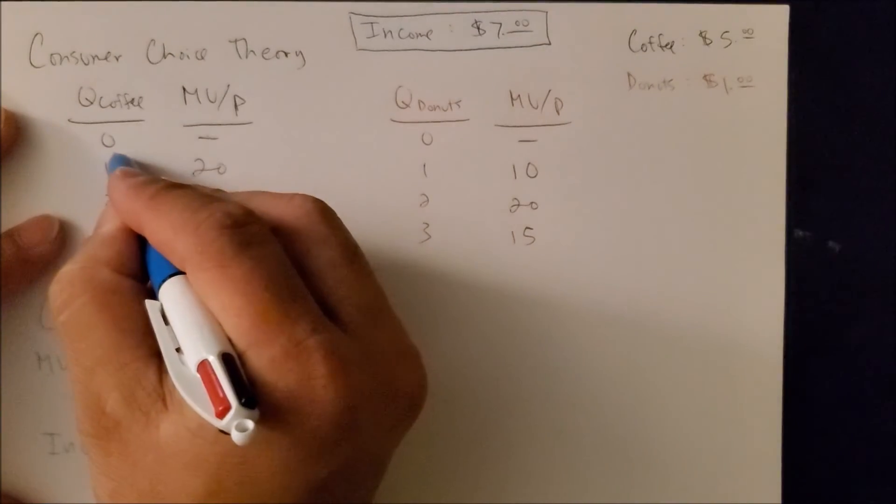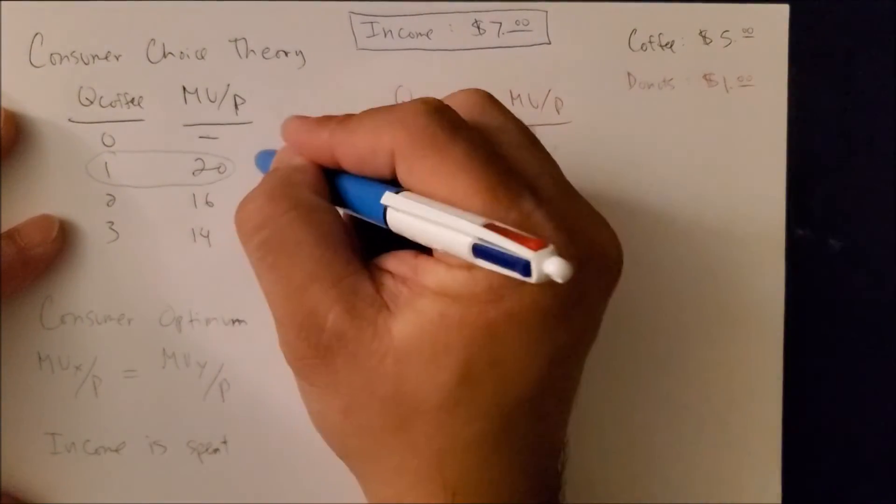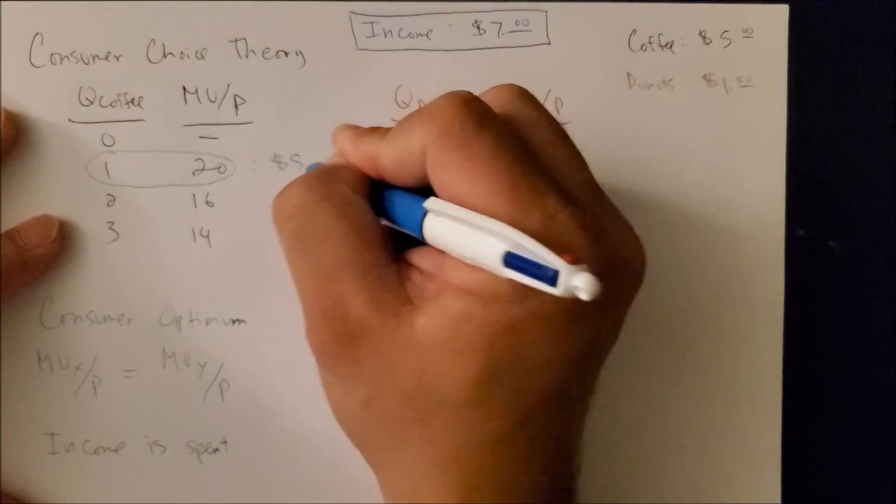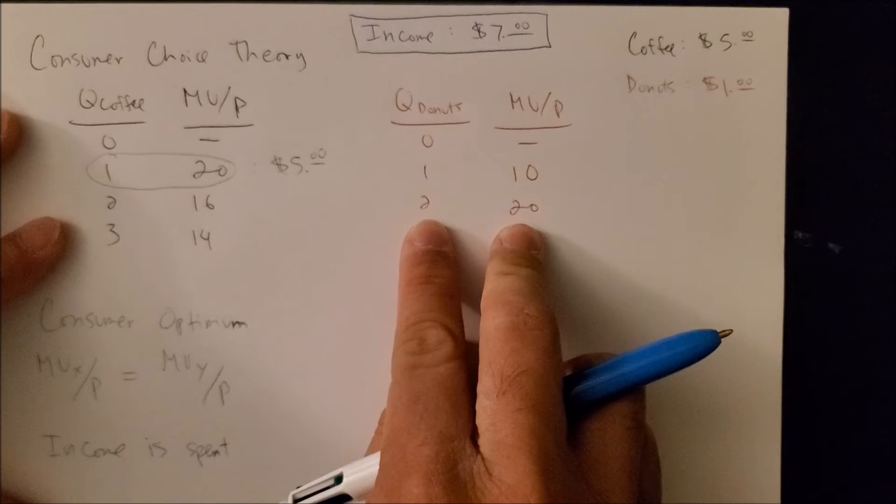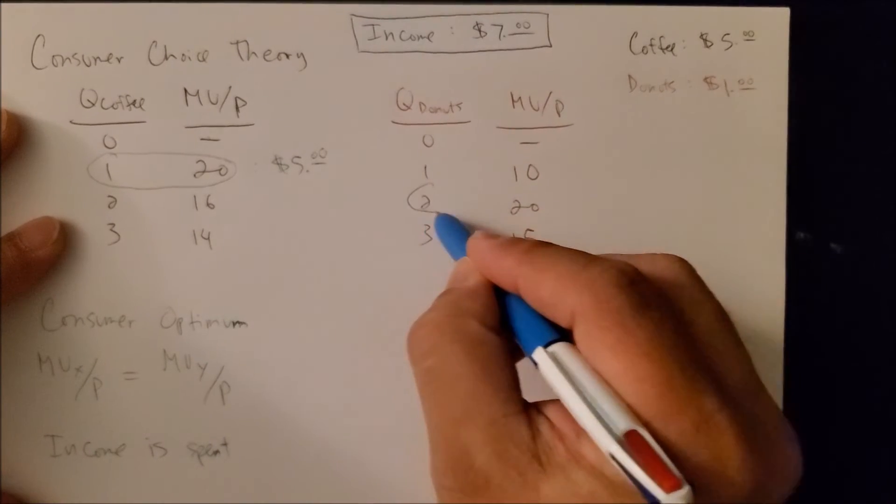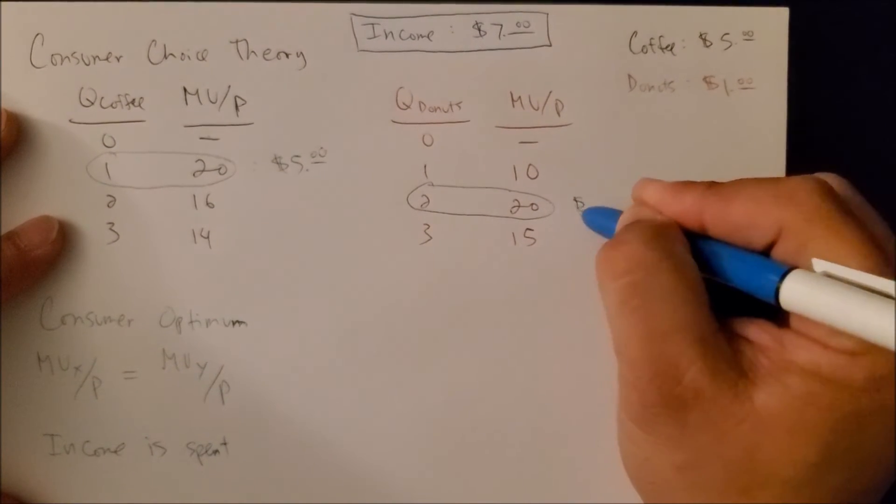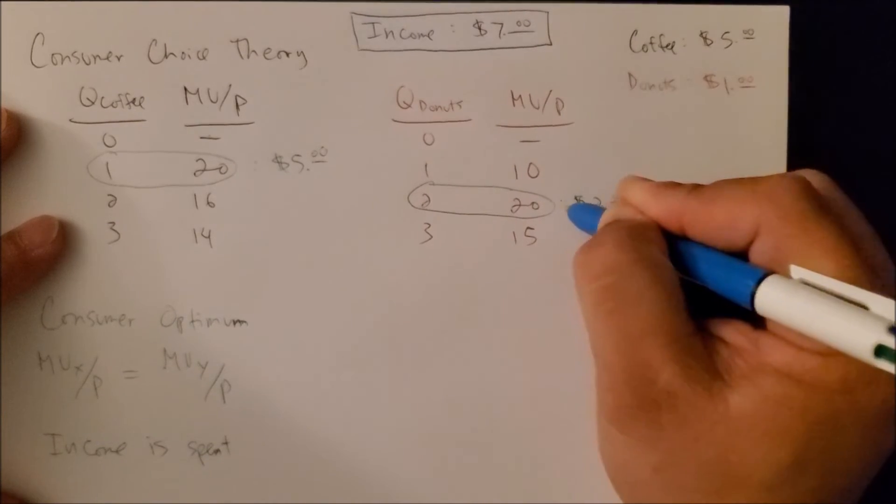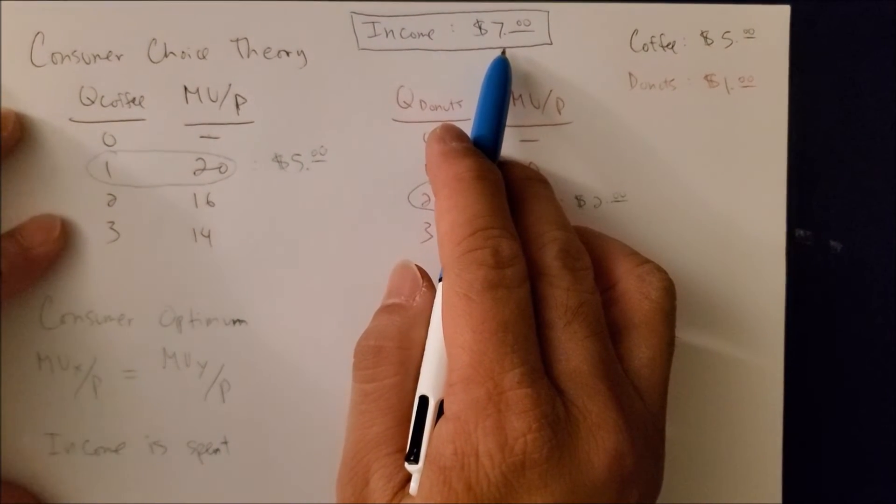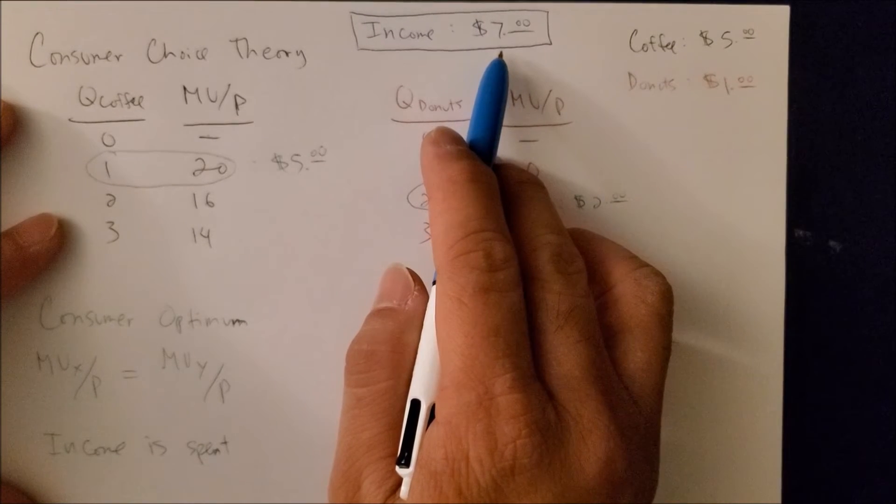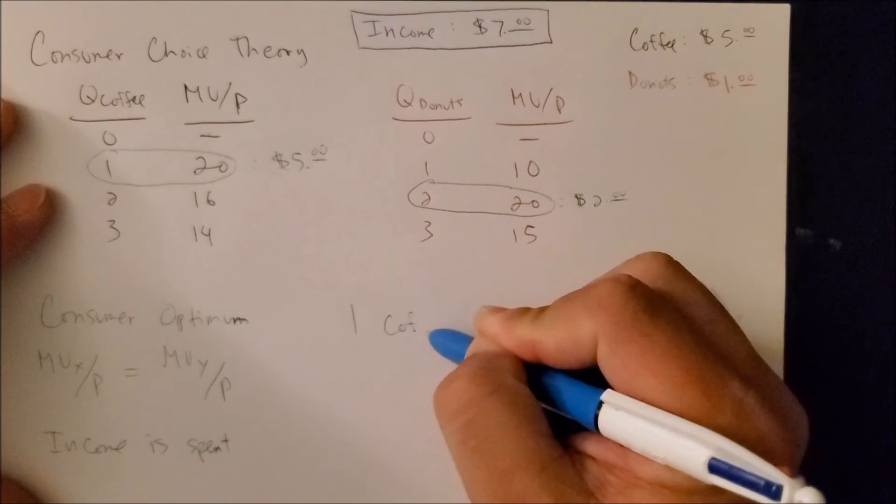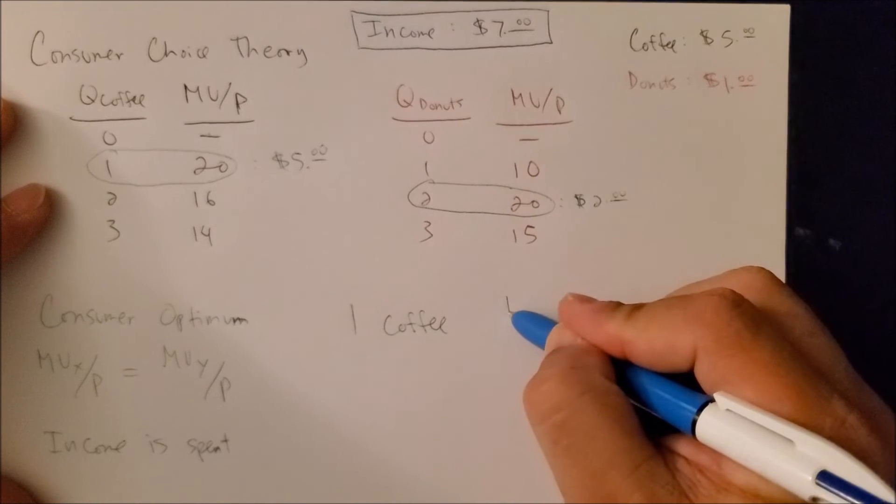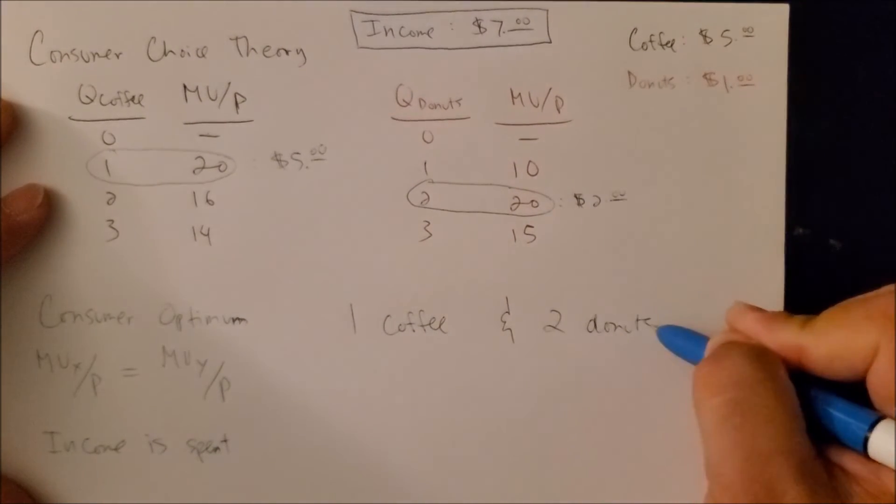When we focus on one cup of coffee, this translates into five dollars. When we see two donuts, this would translate into two dollars, which gives us a total of seven dollars—the same amount that we have as our income. Therefore, we have found consumer optimum, which would be one cup of coffee and two donuts.